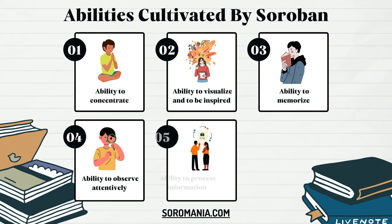The fifth ability is the ability to process information — information processing. A tremendous amount of information is available nowadays, and the ability to rapidly process necessary information is one of the most important abilities of the 21st century. Training for information processing with numbers is realized through the Soroban method of mental calculation, Anzan. Numbers are read rapidly without any mistake and processed in the right brain, then converted to accurate numerical data.